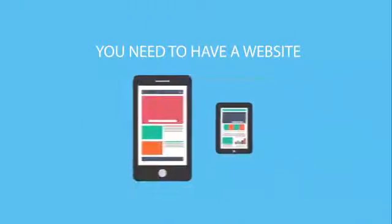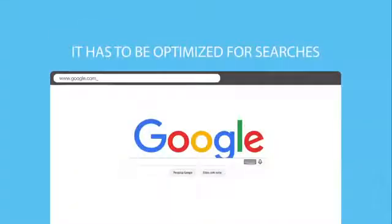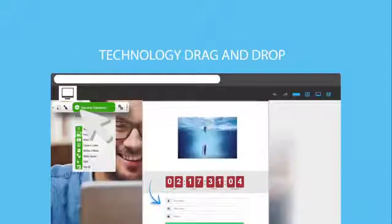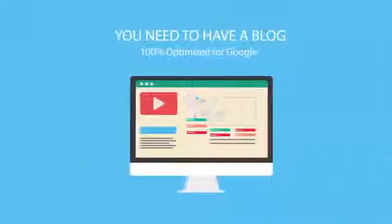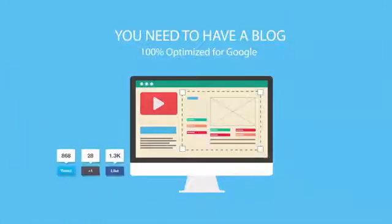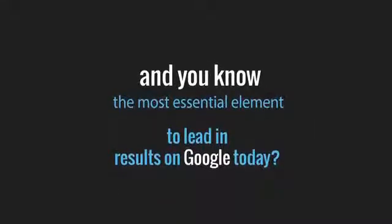You need to have a website with eye-catching visuals. It must be compatible with all kinds of devices, optimized for searches, and must have quick and easy editing tools. To gain authority and establish relationships with your users and potential clients, you will also need to have a blog. And you know what's the most essential element to gaining leading results on Google today? Social proof!